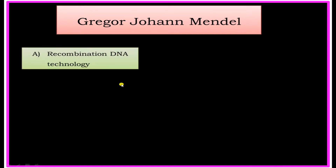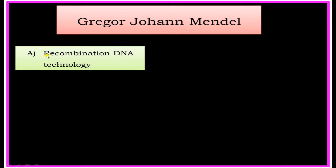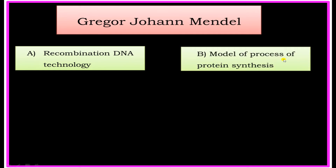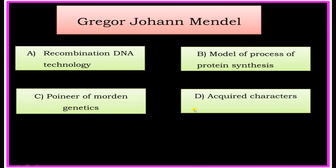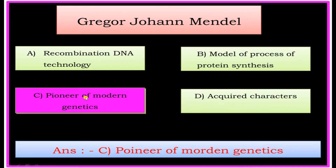Gregor John Mendel. Options: A) Recombination DNA Technology, B) Model of Process of Protein Synthesis, C) Pioneer of Modern Genetics, D) Acquired Characters. The answer is: Pioneer of Modern Genetics.